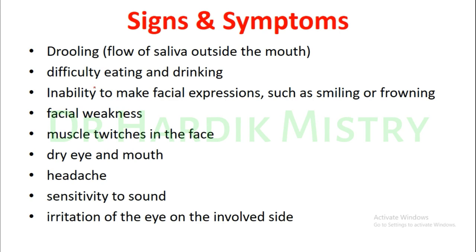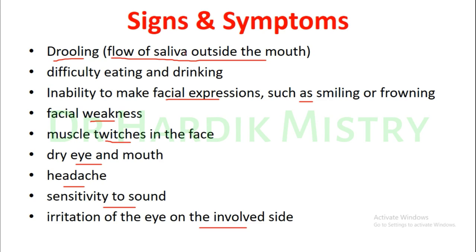Signs and symptoms of Bell's palsy include drooling (flow of saliva outside the mouth), difficulty in eating and drinking, inability to make facial expressions such as smiling or frowning, facial weakness, muscle twitches in the face, dry eye and mouth, headache, sensitivity to sound due to loss of stapedius muscle action, and irritation of the eye on the involved side.